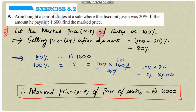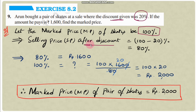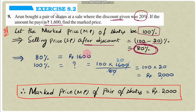Solution: Let the market price of the skates be 100%. On this 100%, the discount offered to Arun is 20%. So after removing the discount, the selling price becomes 100 minus 20 = 80%. This 80% is the amount Arun paid after discount, which is ₹1600. So 80% is equal to ₹1600.